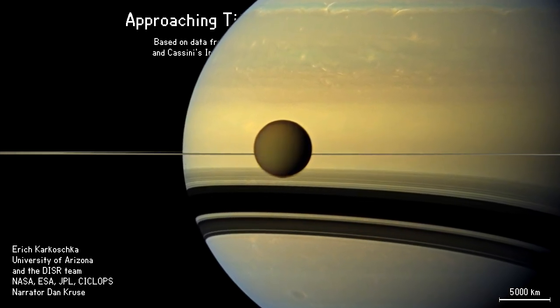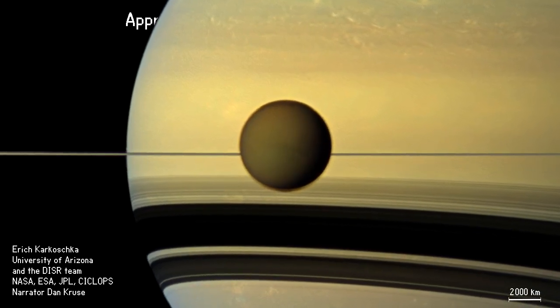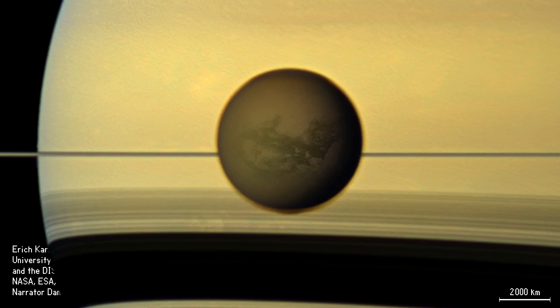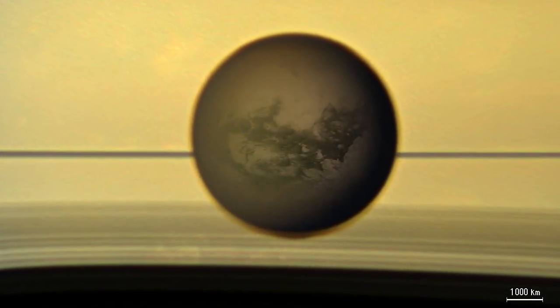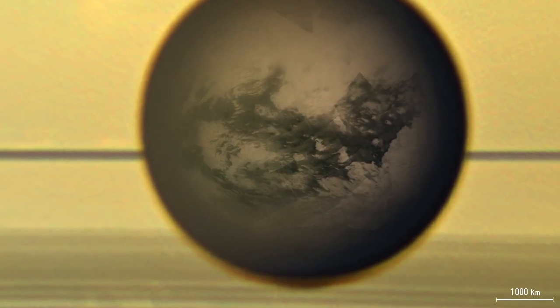Saturn's atmosphere shows a banded structure and a number of storms. We view the edge of Saturn's gigantic ring system. The rings cast major shadows onto Saturn's southern hemisphere. Titan is surrounded by a partially transparent brown haze.